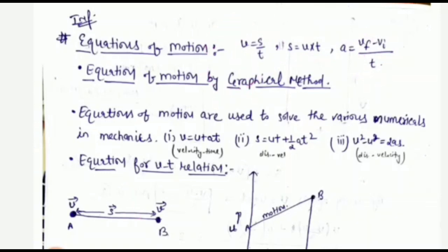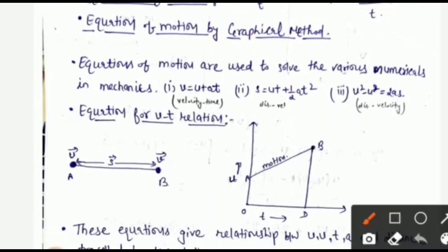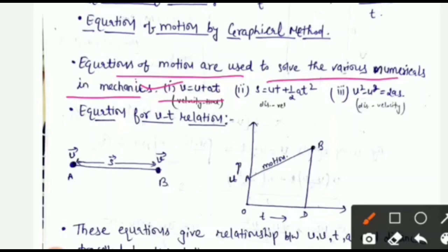Equation of motion by graphical method. Equations of motion are used to solve various numericals in mechanics. Basically, there are three types of equations of motion. First is v = u + at. Second is s = ut + ½at² — this relates displacement and time. Third is v² = 2as — this relates velocity and displacement.